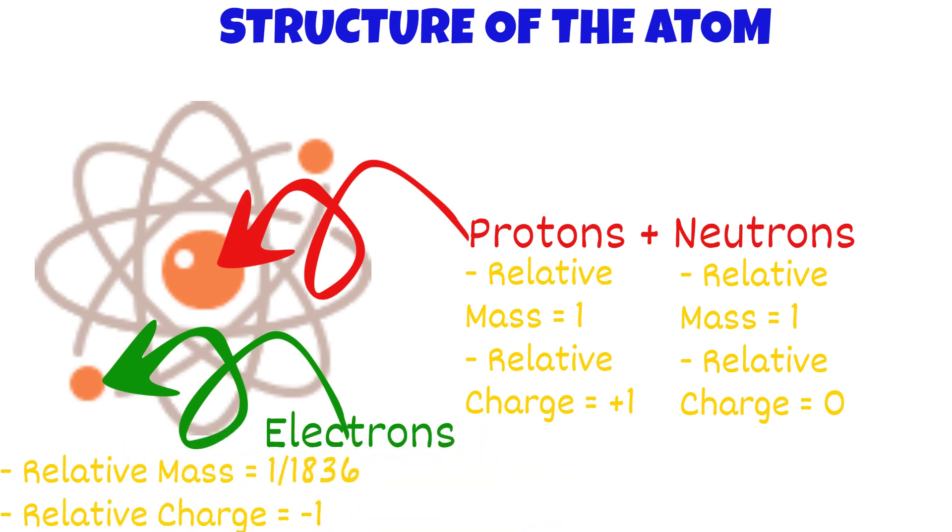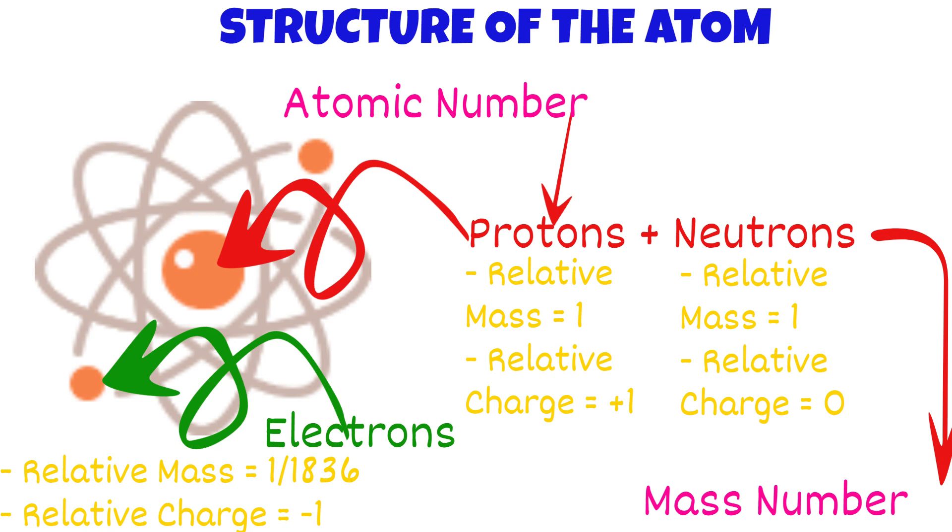Moving on, the number of protons in an atom's nucleus is known as the atomic number or proton number. Each element has a different atomic number. The mass number or the nucleon number is the total number of protons and neutrons in the nucleus of an atom.